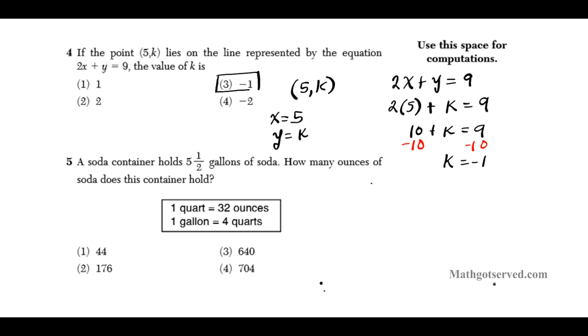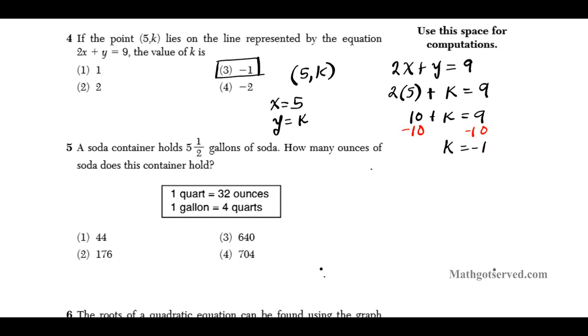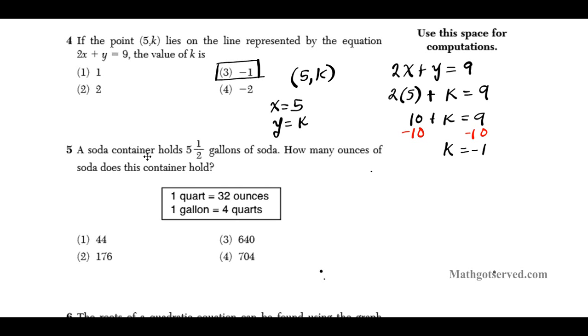Now let's shift our attention to question 5. Question 5 says that a soda container holds 5 and a half gallons of soda. How many ounces of soda does the container hold? So we're going to be doing a conversion here. We're going to be converting from gallons to ounces. So we are provided with a conversion chart. It shows us that we have to take two steps. To go from gallons to ounces, we have to, first of all, take the first step, which is from gallon to quarts. And then the second step will be from quarts to ounces.